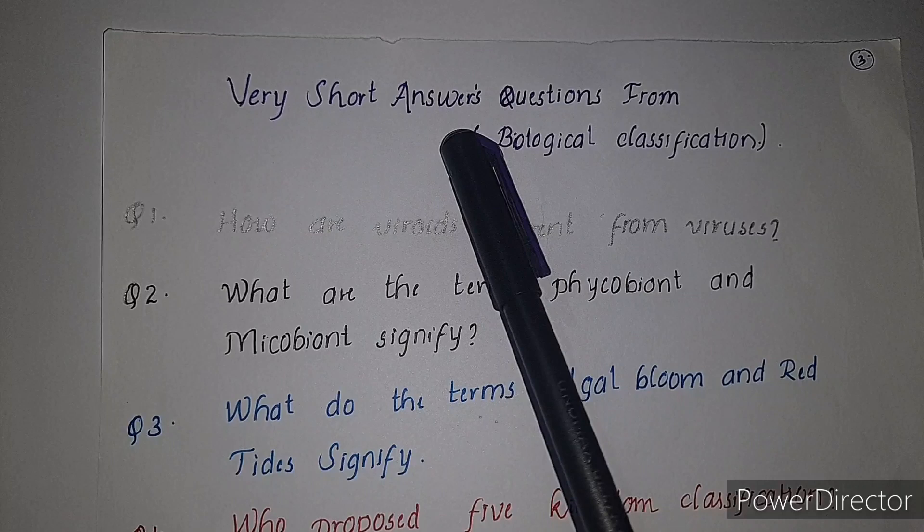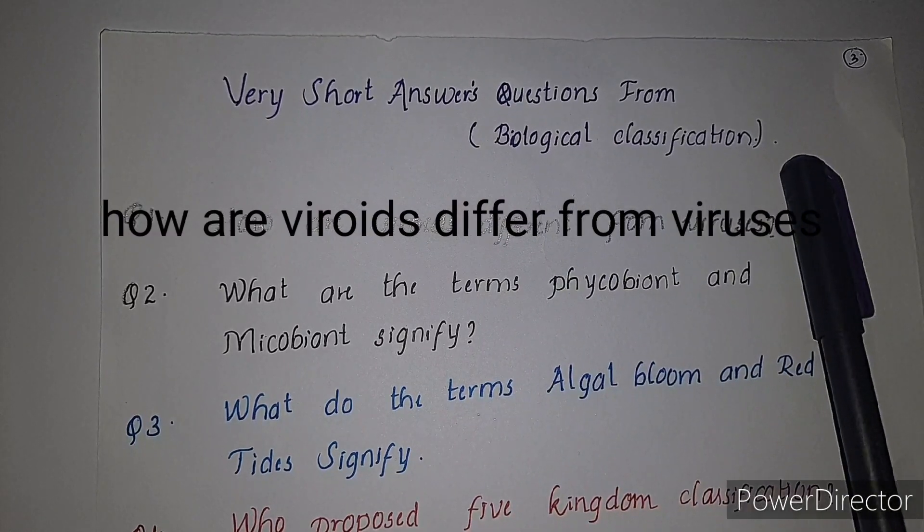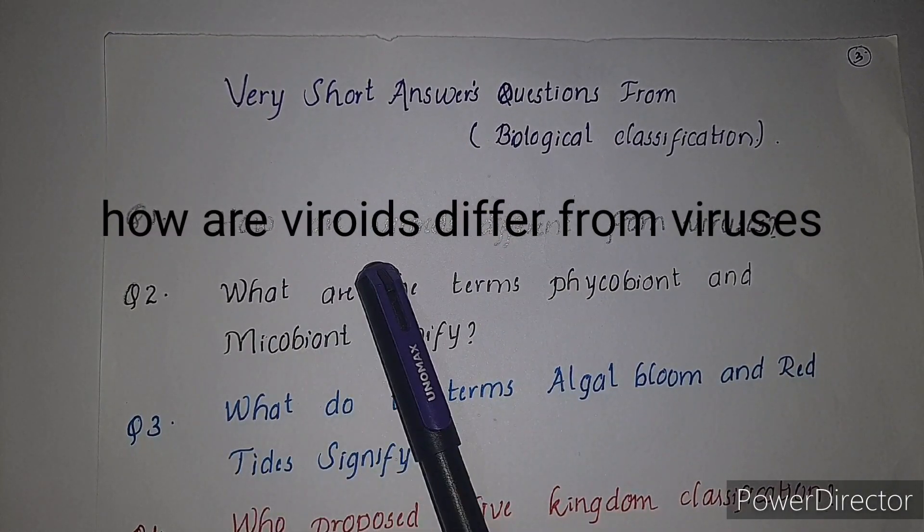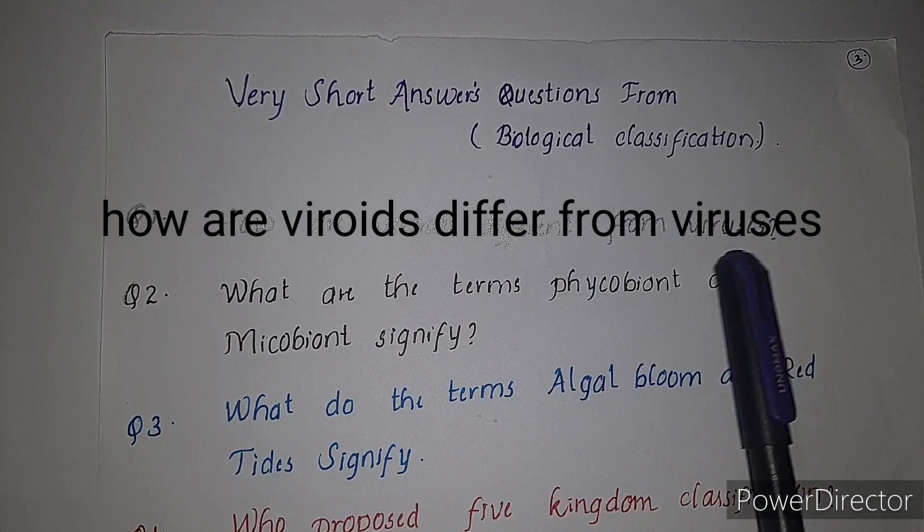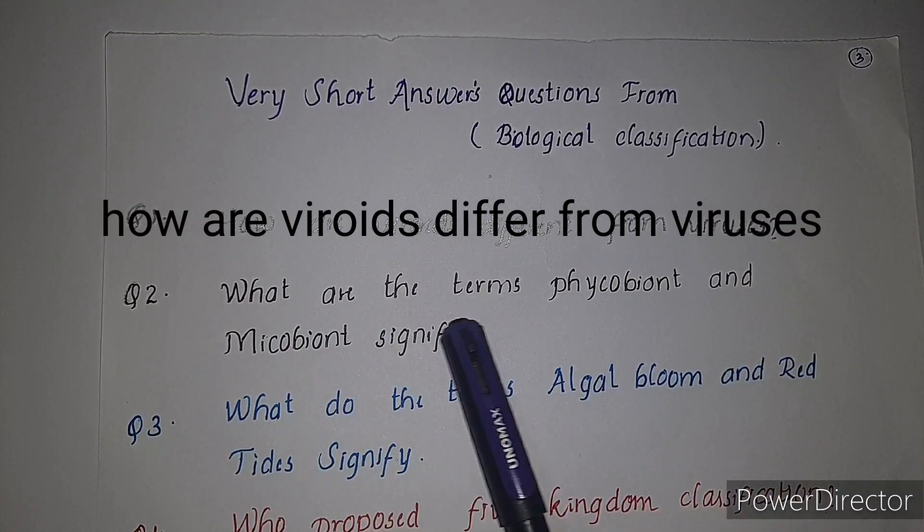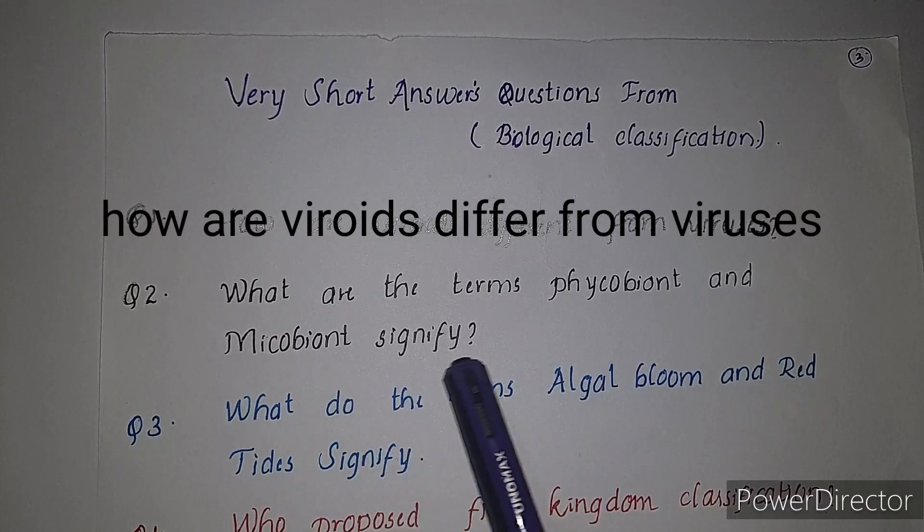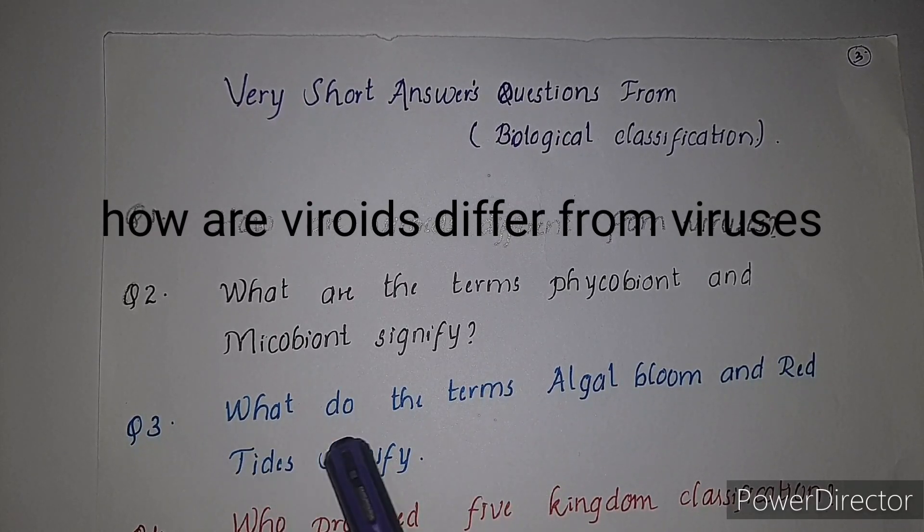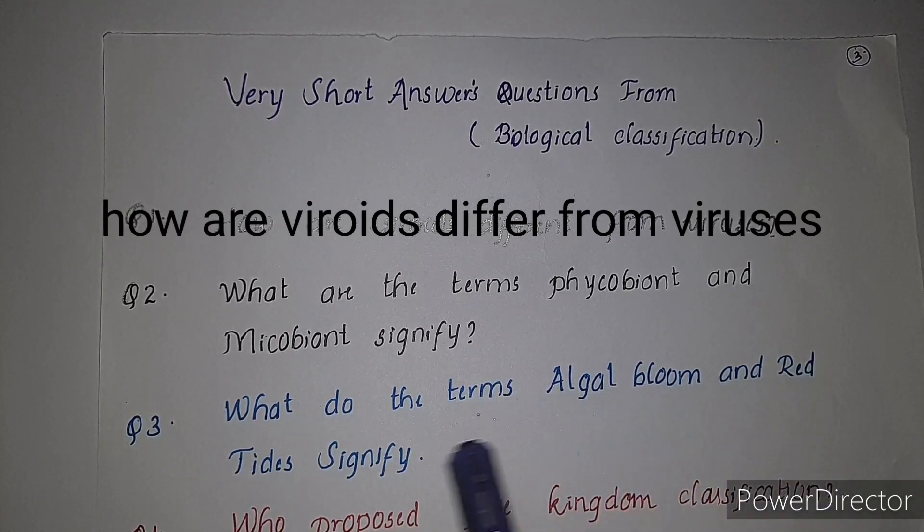Very short answer questions from biological classification. First question: how are viroids different from viruses? Second question: what are the terms phycobiont and mycobiont signify?